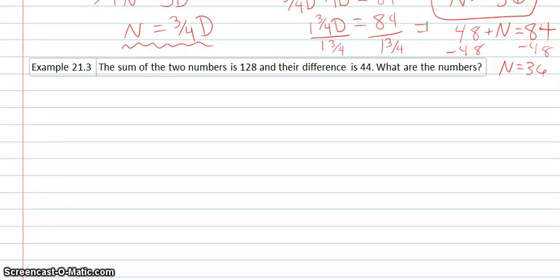And our third example is another example of finding two numbers. This time we have the sum of the two numbers is 128, and their difference is 44. What are the numbers? You can use any variables that you want. I'm just going to say x plus y equals 128. And then I'll say x minus y equals 44. Because the sum means addition, and difference means subtraction.